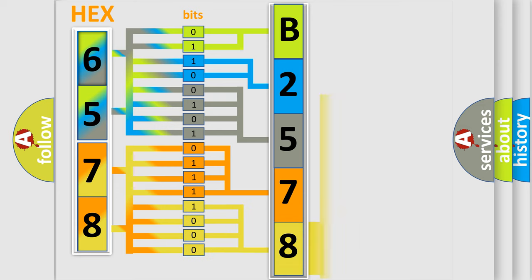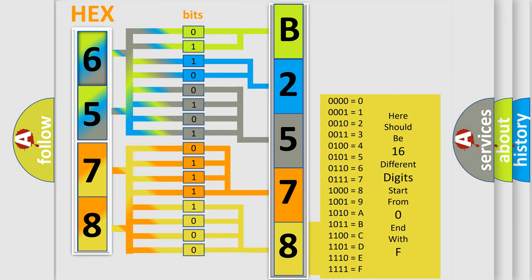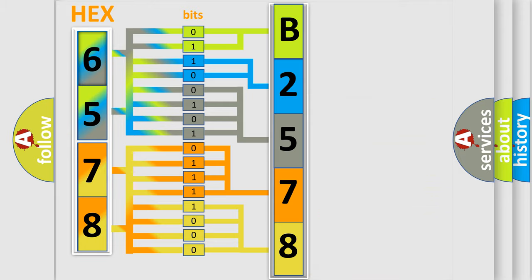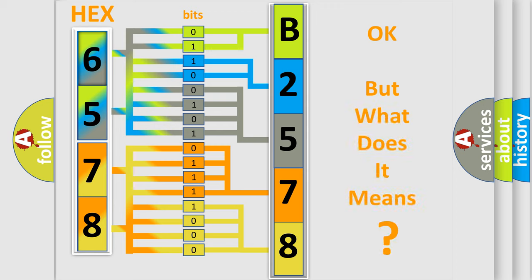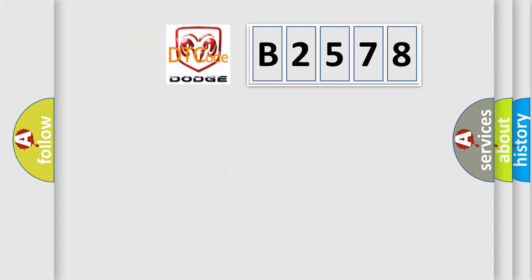A single byte conceals 256 possible combinations. We now know in what way the diagnostic tool translates the received information into a more comprehensible format. The number itself does not make sense to us if we cannot assign information about what it actually expresses. So, what does the diagnostic trouble code B2578 interpret specifically for Dodge car manufacturers?